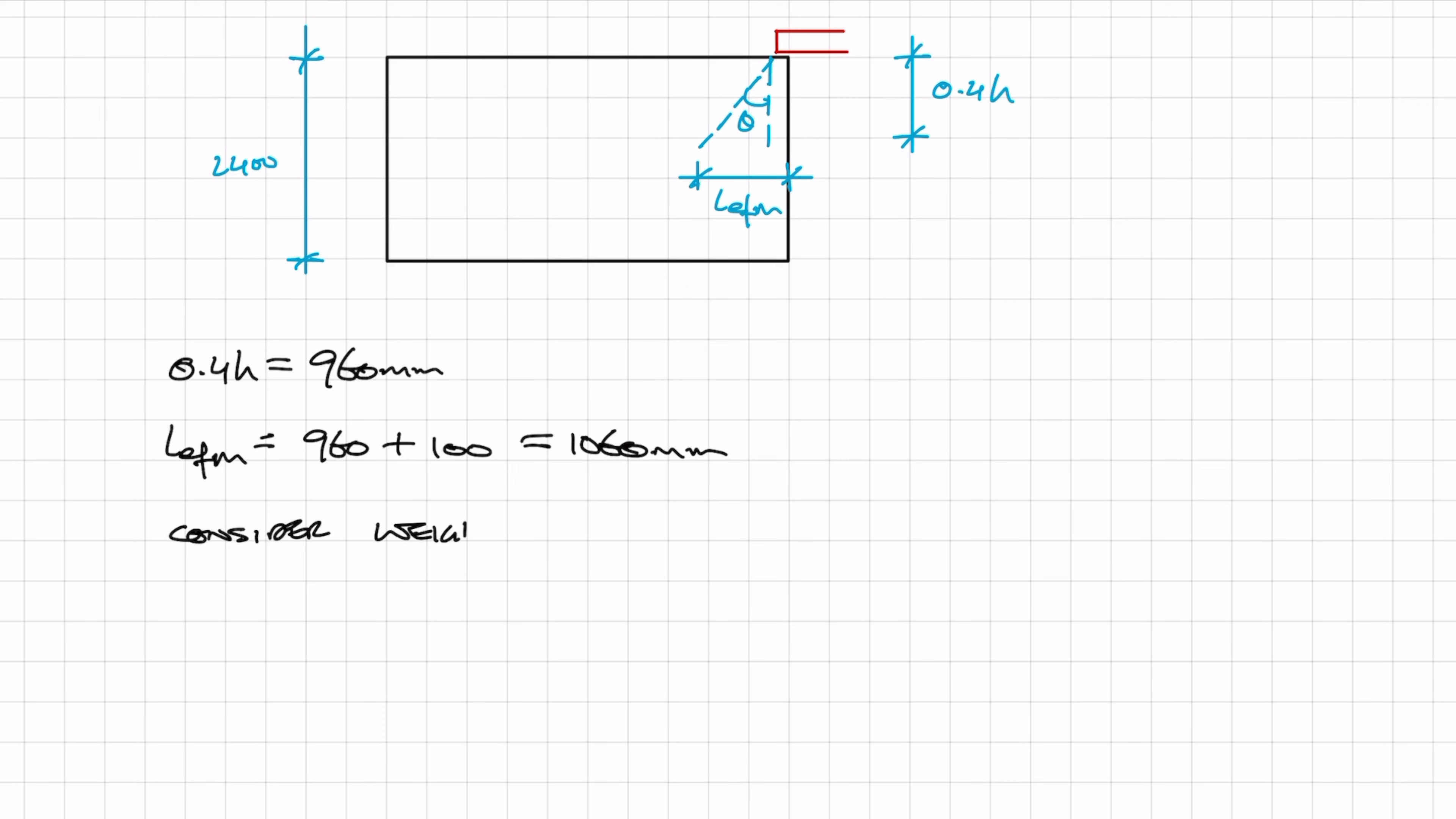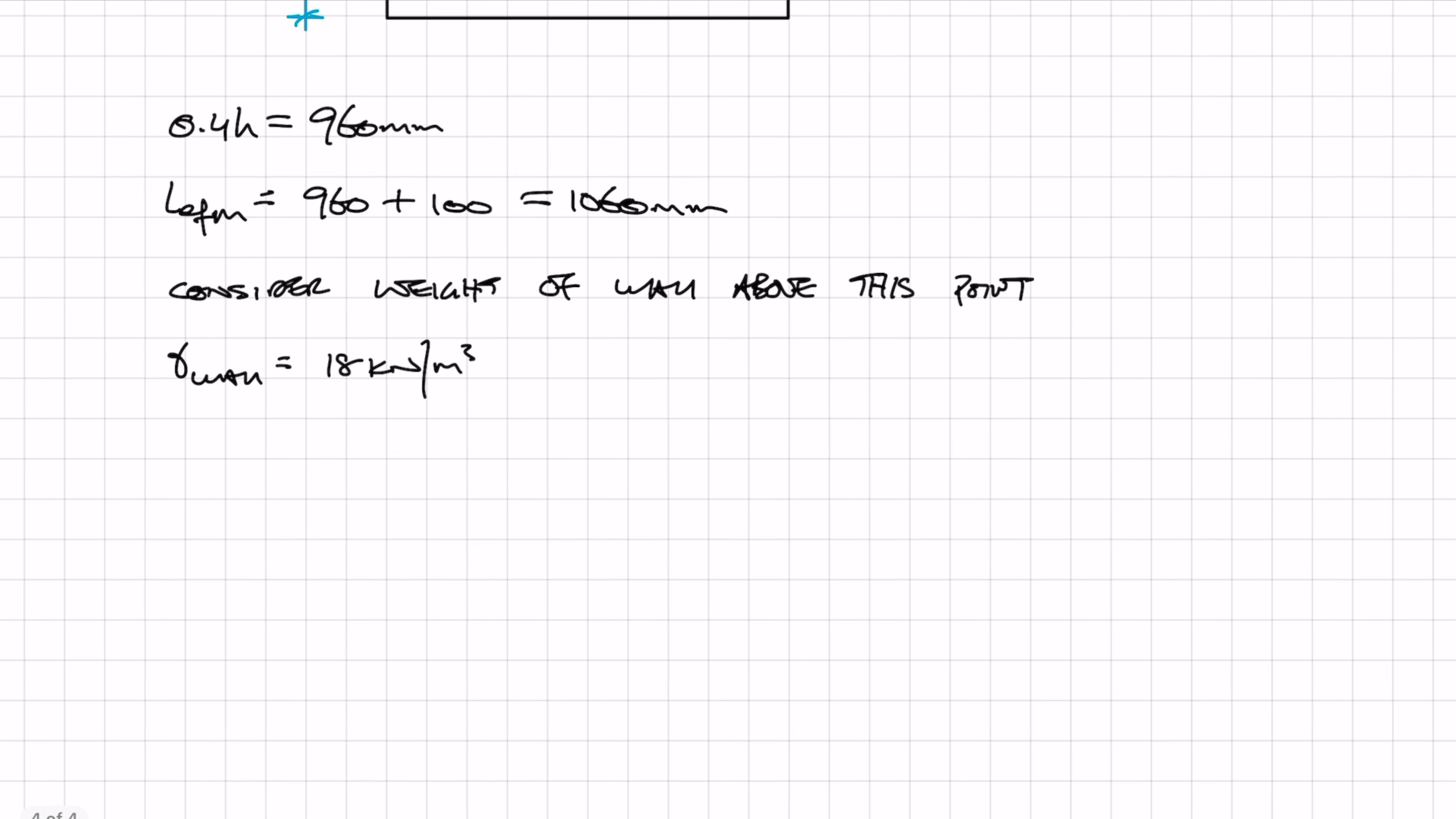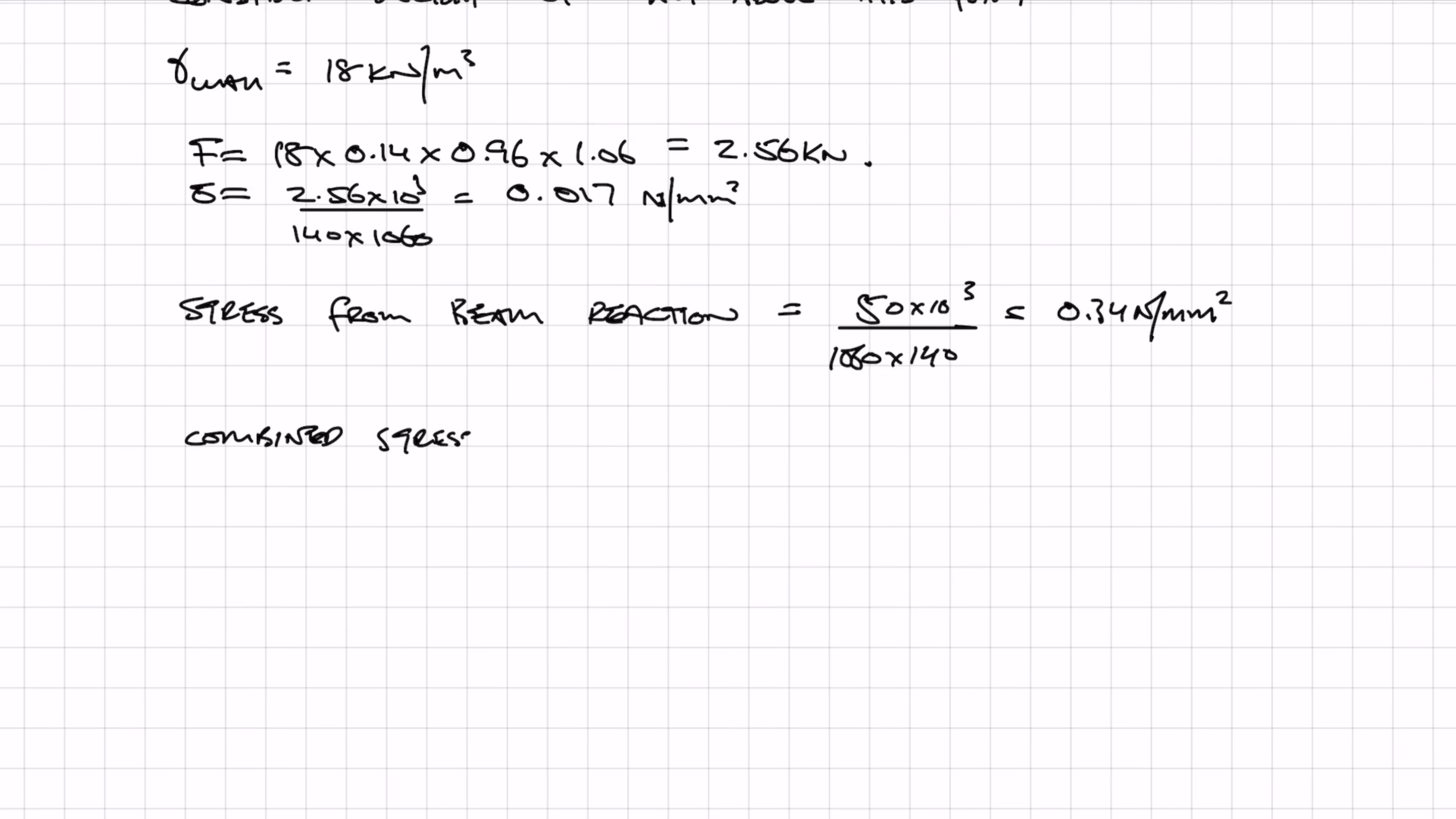We also want to consider the self-weight of the wall, so we need to work out the force or the stress from the self-weight of the wall. If we assume that the blockwork density is 18 kN per meter cubed, we can then work out the stress which is being applied from the self-weight of the wall above that point. This stress is really small and it works out as 0.017. We then need to add on the beam reaction stress spread over that area, and that's simply the beam reaction divided by LEFM times by the thickness. Then we get a combined stress of 0.36 newtons per millimeter squared.